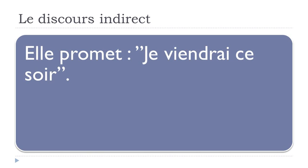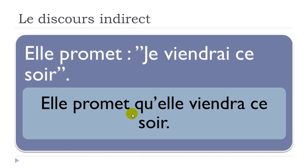A third example: elle promet je viendrai ce soir. Promettre is to promise. Je viendrai means I will come, ce soir is this evening. To transform this: elle promet que — and since the subject is feminine, qu'elle. The verb is in the future form je viendrai, so for elle it will be elle viendra, and ce soir doesn't change. Result: elle promet qu'elle viendra ce soir.